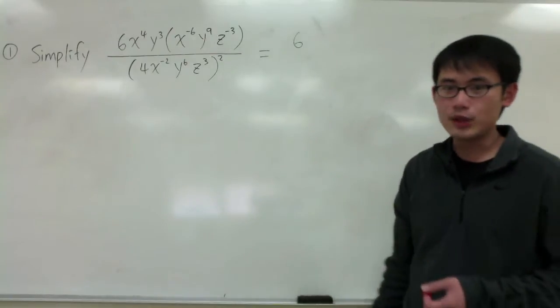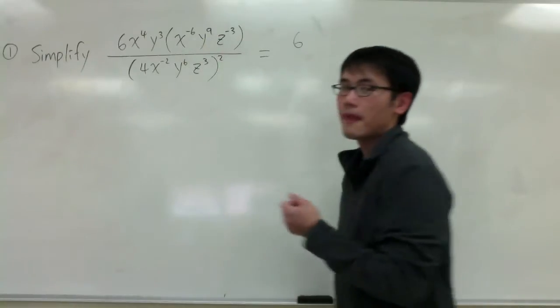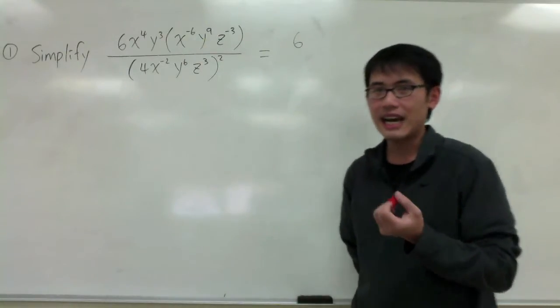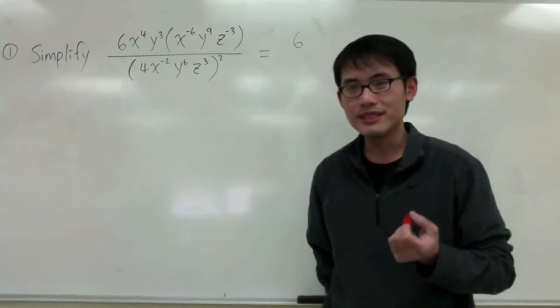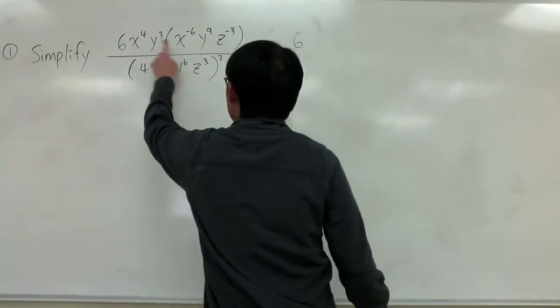Then we are going to look at the variables. I have x to the 4 and then x to the negative 6. When you have two things that have the same base, what you are going to do is add the exponent. Keep the base, I have the x.